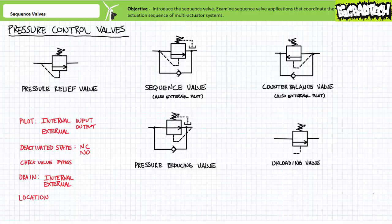Internal pilot lines can monitor the valve's input or primary port, as in the case of a pressure relief valve, and certain configurations of sequence and counterbalance valves. Or, the internal pilot line can monitor the valve's output or secondary port, as in the case of pressure reducing valves. External or remote pilot lines can be found in the case of unloading valves, and certain configurations of sequence and counterbalance valves.